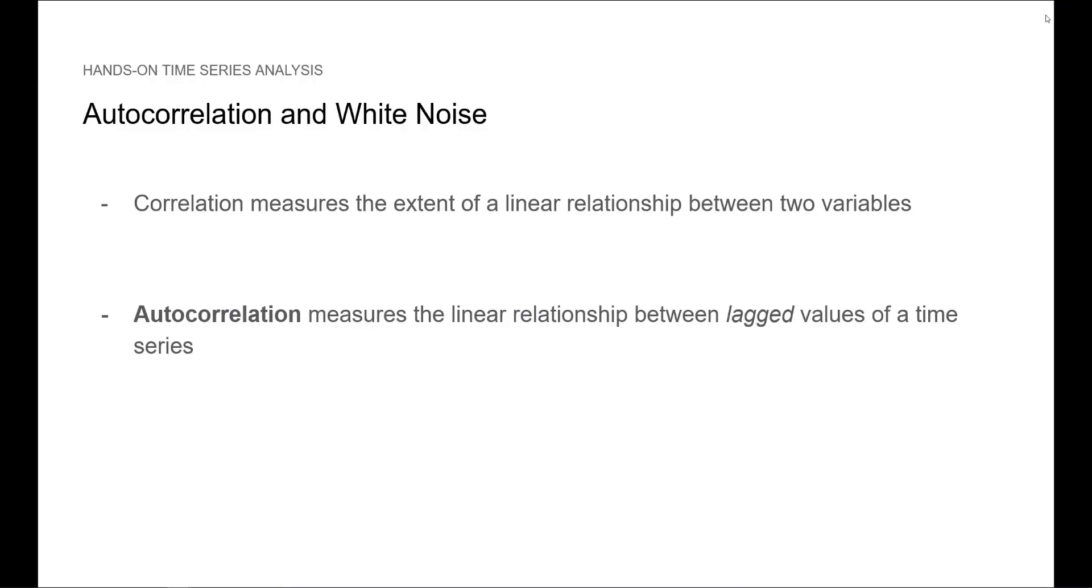We know that correlation measures the extent of a linear relationship between two variables. Therefore, autocorrelation measures the linear relationship between lagged values of a time series.